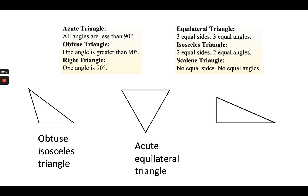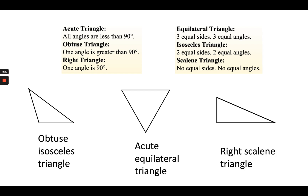For our last triangle here, at first glance I can see that I have a right angle right here. I can use the corner of my paper to confirm that. So if I have one right angle, I know it's going to be a right triangle. But another way to describe this is by thinking about the sides — since no sides are equal, no angles are equal, so this triangle would be a right scalene triangle.